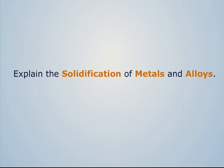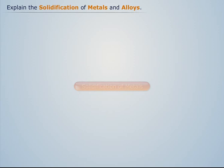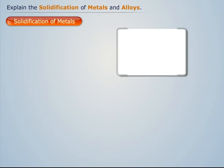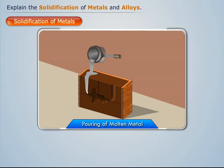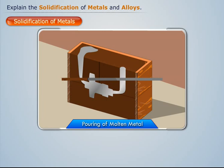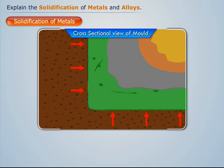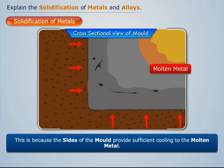Let's discuss the solidification of metals. When we pour the molten metal into the mold cavity, we see that the solidification process starts from the sides of the mold, then moves towards the molten metal. This is because the sides of the mold provide sufficient cooling to the molten metal.